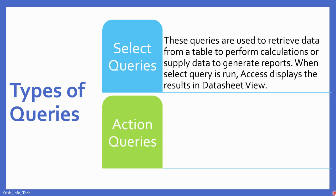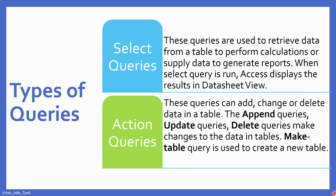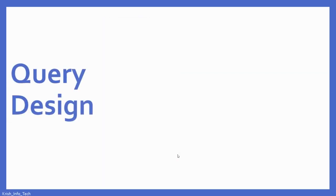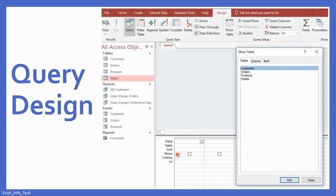What are the types of queries available? The first one is select query, and the second one is action query. A select query is used to select specific data from your table. Action queries include append queries to add data, update queries to change data, delete queries to delete data, and make-table queries to create a new table.